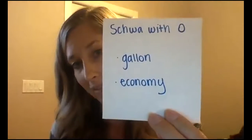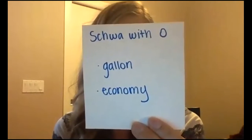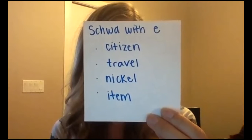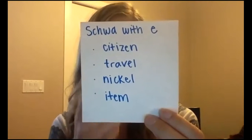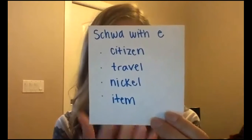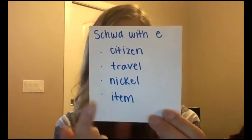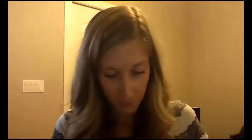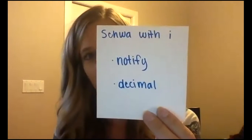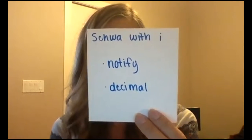Then we have schwa with the letter O — your words are gallon and economy. We have schwa with the letter E — your words are citizen, travel, nickel, and item. So you hear that "uh" sound: citizen, you hear the "uh." It just kind of rolls off your tongue. Then schwa with the letter I, the vowel I — you have the words notify and decimal. That was our word that was used more than once.